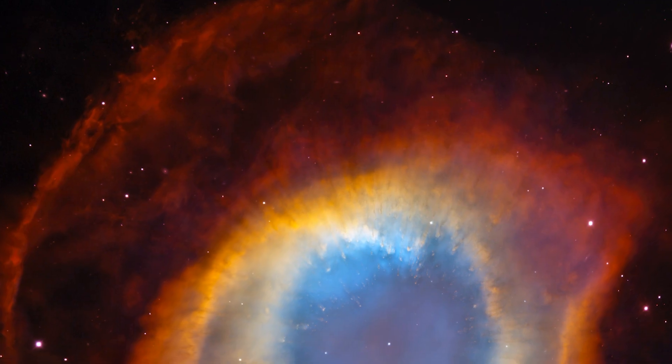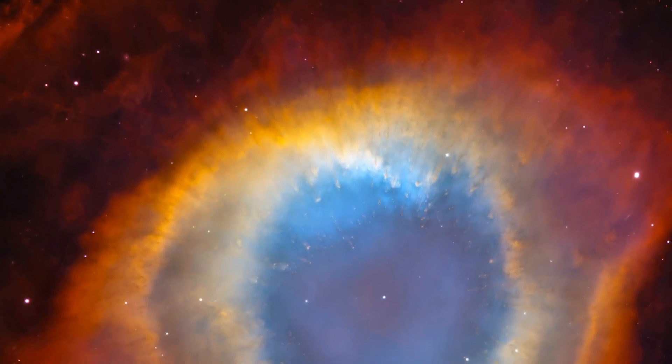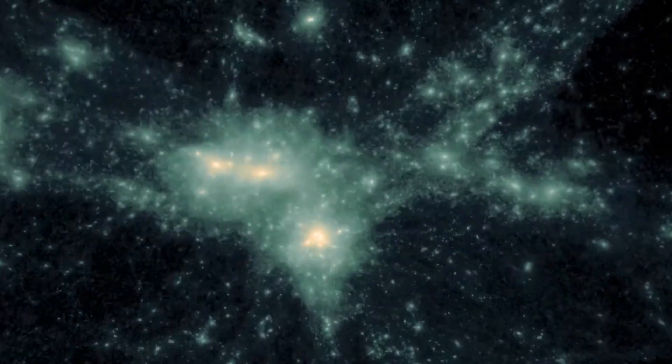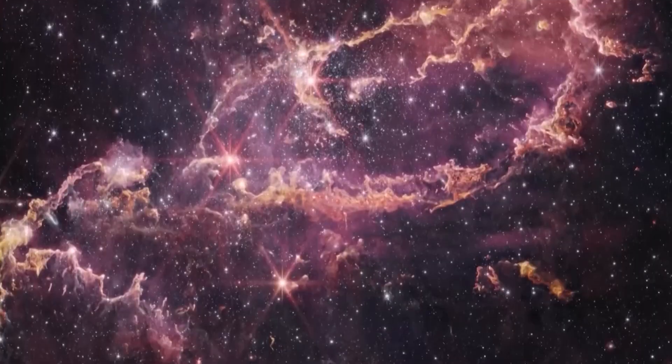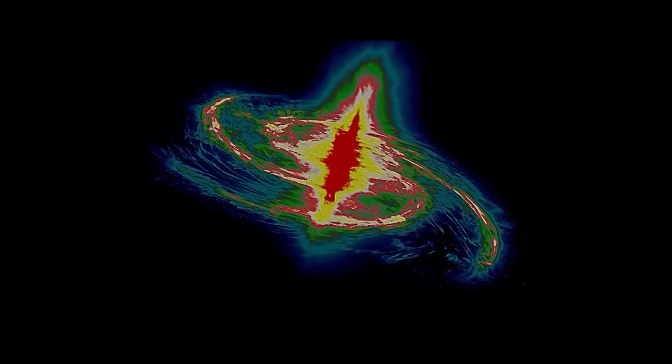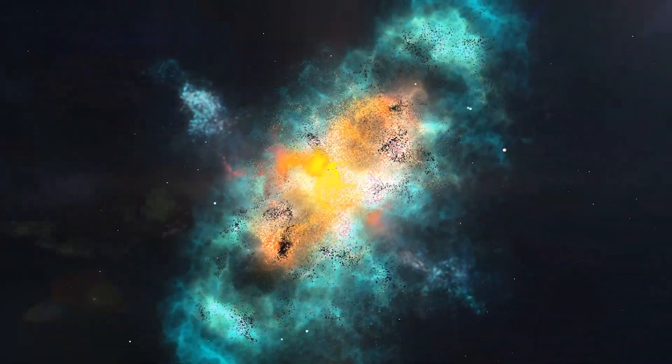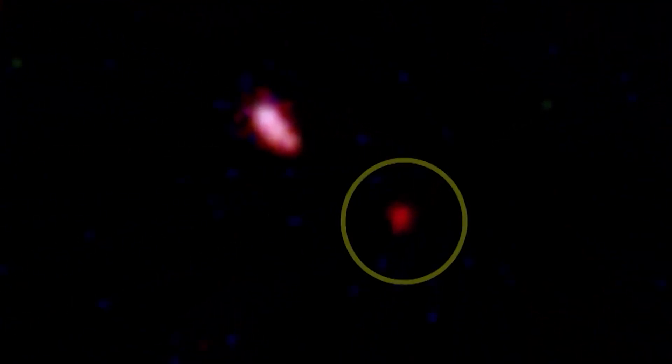Radiation escaping from GNZ-11 also appears to ionize surrounding gas clouds, contributing to the process of cosmic re-ionization. This was the epoch in which the fog of neutral hydrogen was cleared, making the universe transparent to light. Identifying a direct source of ionizing photons and linking it to such a dynamic environment strengthens the idea that small but ultra-luminous galaxies played a major role in this monumental transformation of the universe.